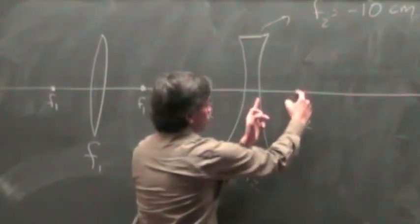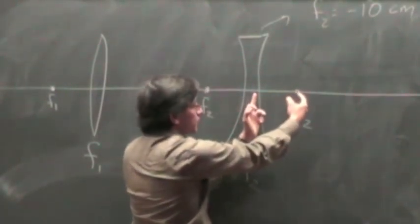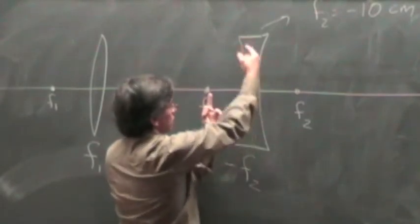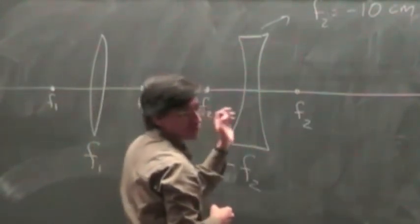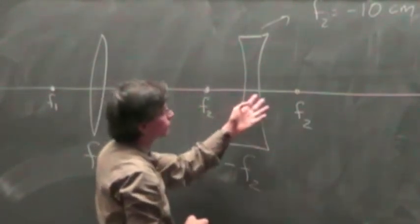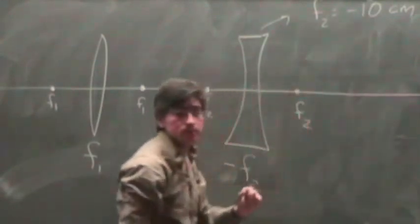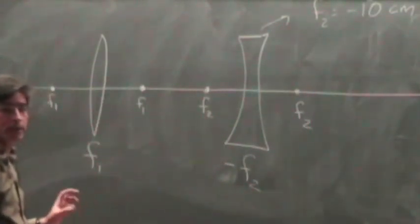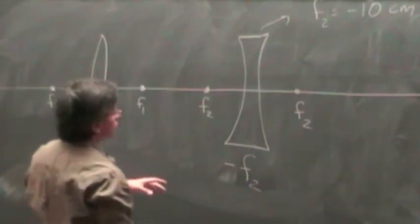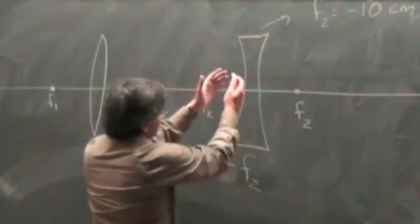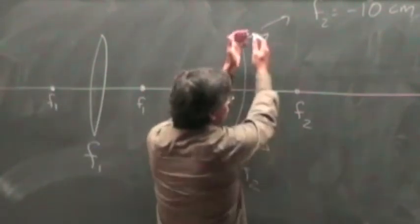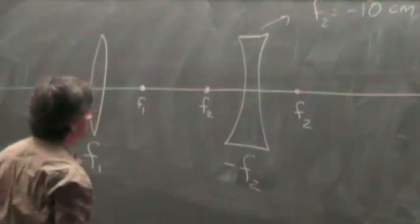That means that each one of these focal points is a distance 10 centimeters from the diverging lens. But when you're using the thin lens equation, do not forget the minus sign. Because that comes with being diverging. If you forget the minus sign, in your equation you're using this as a converging lens. This will be obviously different.